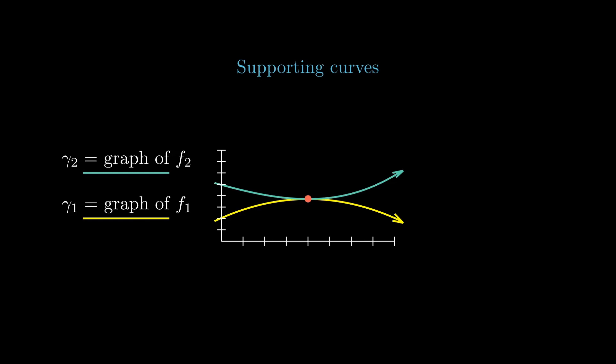Then the curves, in a small neighborhood of p, become the graphs of two functions f1 and f2. Gamma1 supports gamma2 from the right if f1 is less or equal to f2 along a small interval.